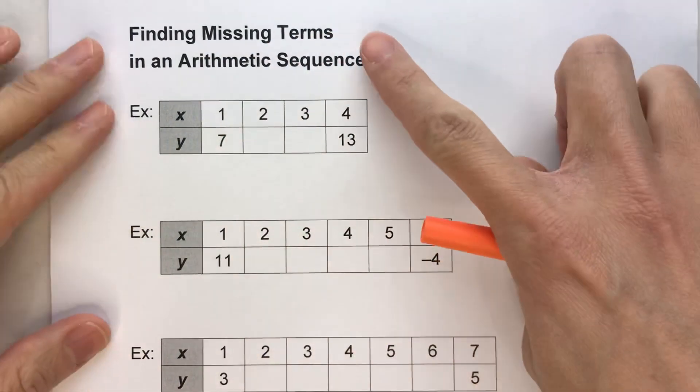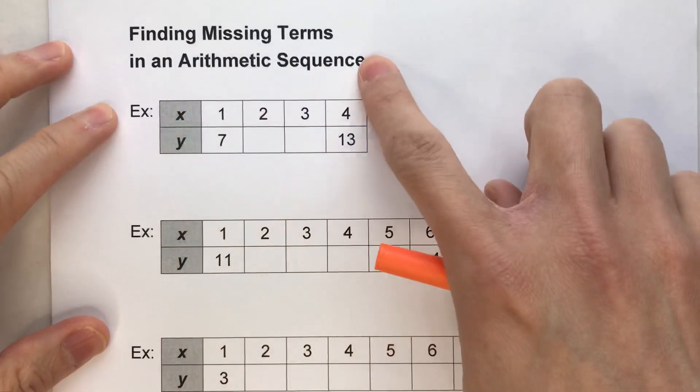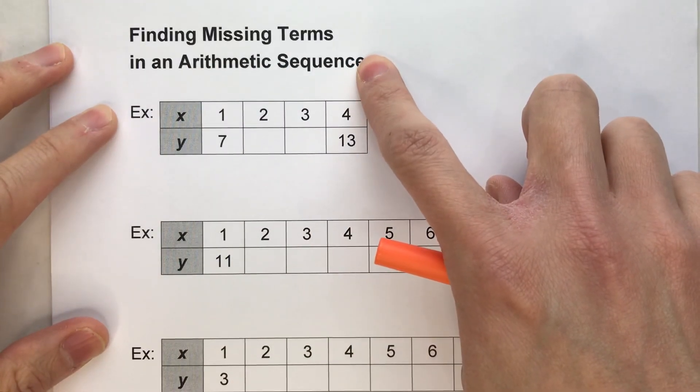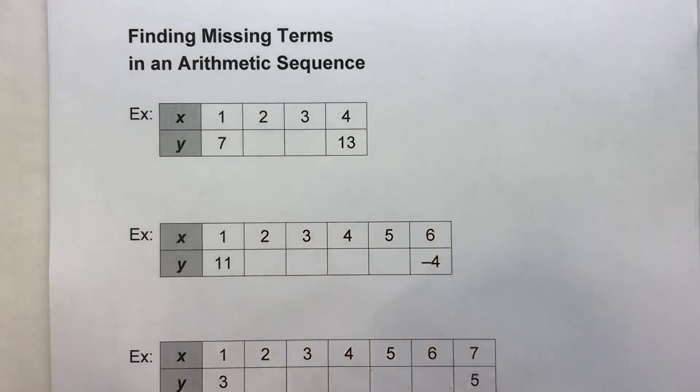So today, we're finding the missing terms in an arithmetic sequence. Now remember, an arithmetic sequence is when you have a sequence that repeatedly adds the same amount every single time.